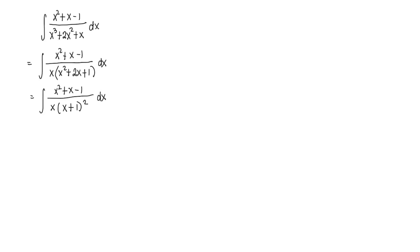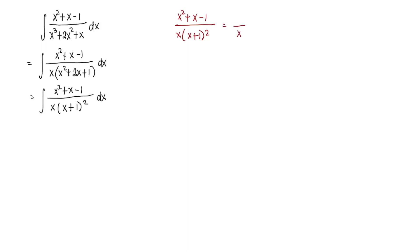Now let's resolve that into partial fractions. We express the fraction in factored form: x squared plus x minus 1 over x times x plus 1 squared equals A over x plus B over x plus 1 plus C over x plus 1 squared. Since all factors in the denominator are linear, all numerators will be constants.